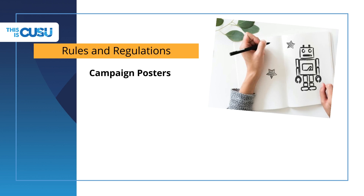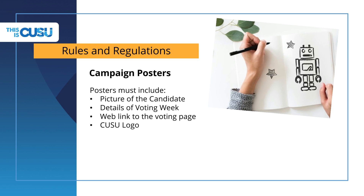Campaign posters are really useful items to help promote yourself. All candidate posters must have a picture of you, so students will be easily able to put a name to a face. Please make sure this photo is clear and easily recognisable — group photos are not appropriate. The poster must also contain details of voting week so students know how and when they can vote for you, and a web link to the voting page must also be included. Finally, make sure that you put the KUSU logo on your poster, as this makes it easy to see which posters are part of the elections.